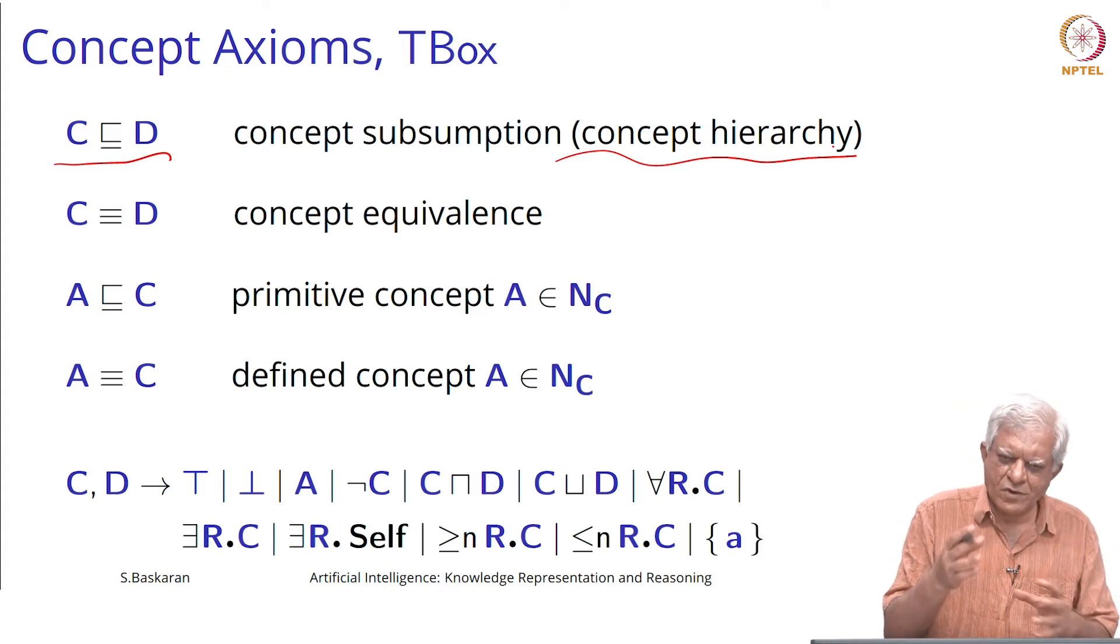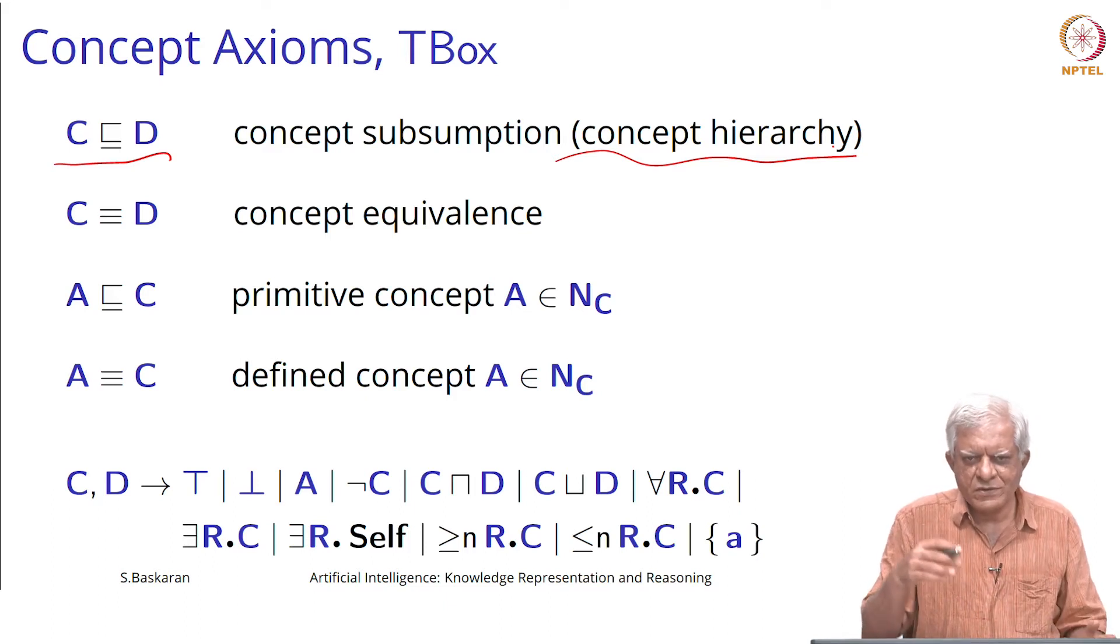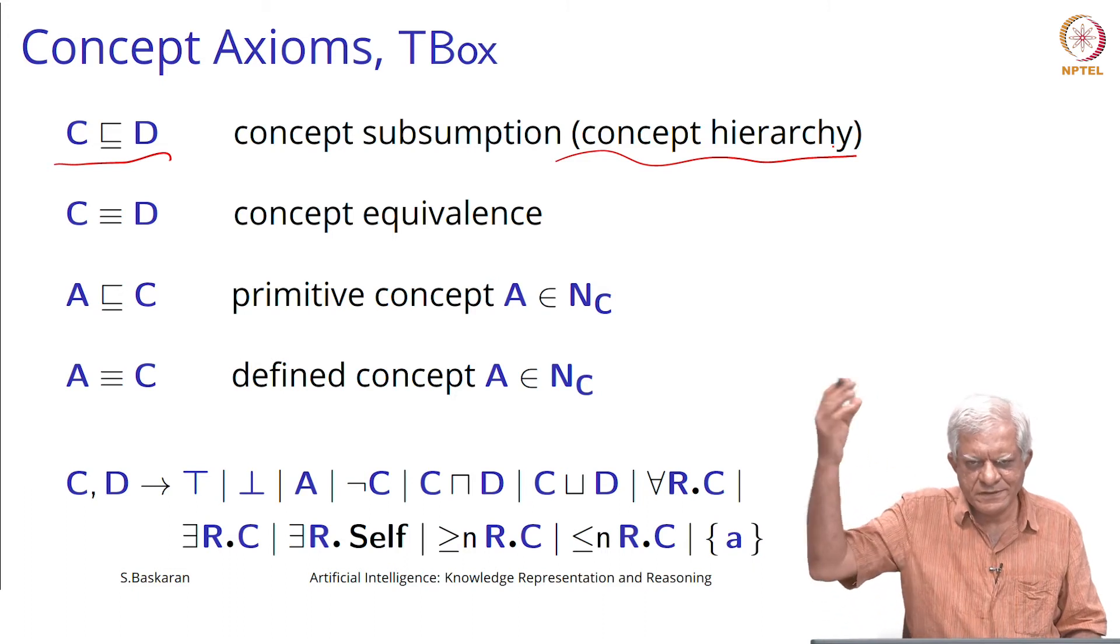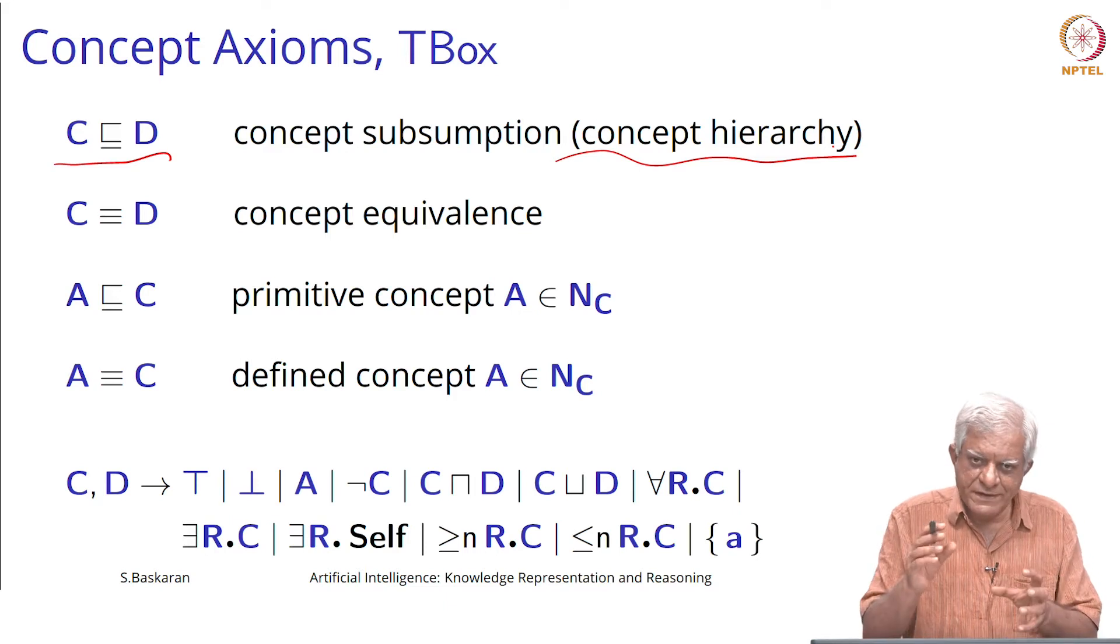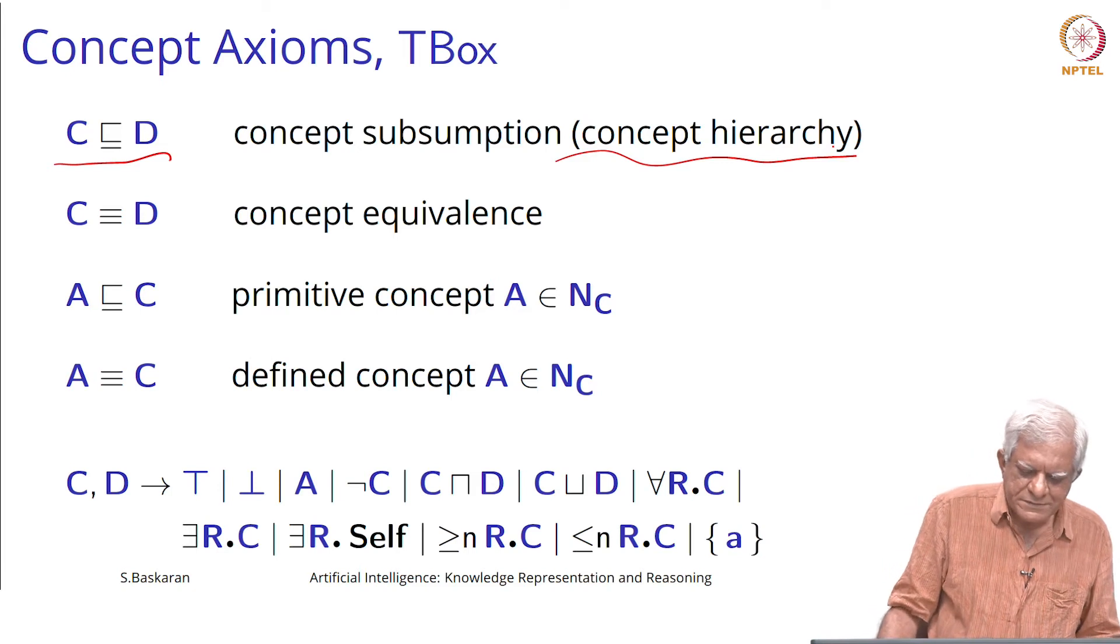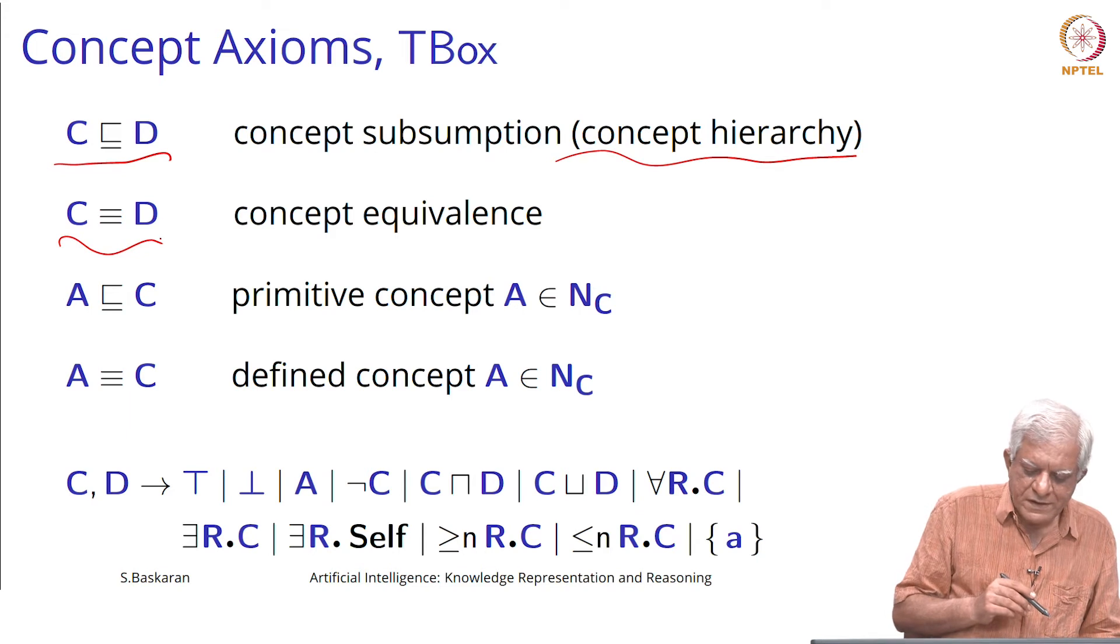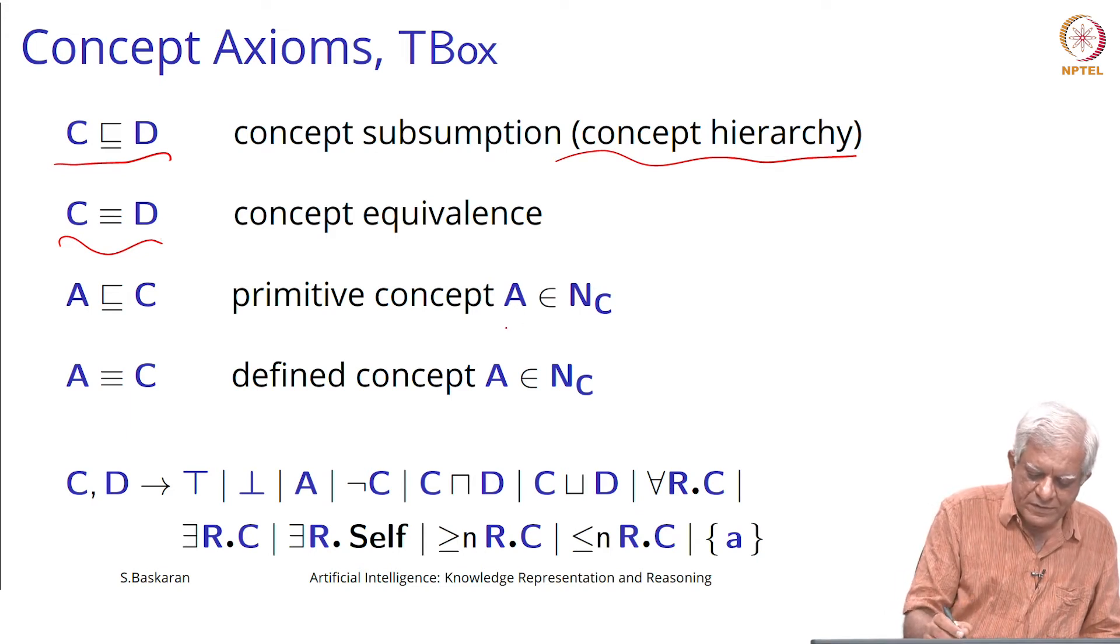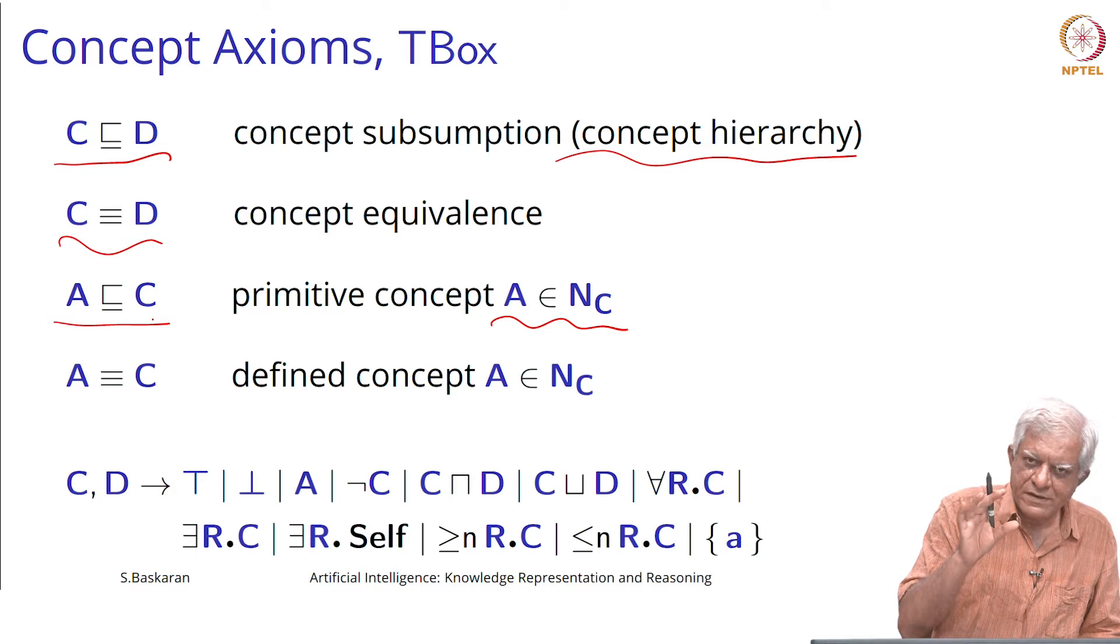We have been talking about the natural world taxonomy quite often. A goat is a mammal, a mammal is an animal, an animal is a living creature and so on. Each of them is a concept, and they are sub concepts of other concepts. We can talk about concept equivalents, these are like synonyms. We can talk about primitive concepts which have this subsumption relationship with complex or defined concepts.